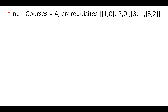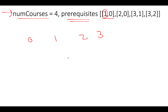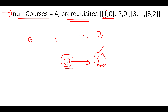Let's take the example from the question. We have four courses — nodes 0, 1, 2, and 3 — representing course IDs. Iterating over the prerequisite array to build the graph: the first element is [1,0], meaning for taking course 1 you must complete course 0. So we draw an edge from node 0 to node 1. Next is [2,0]: for taking course 2 you must complete course 0, so an edge goes from 0 to 2.